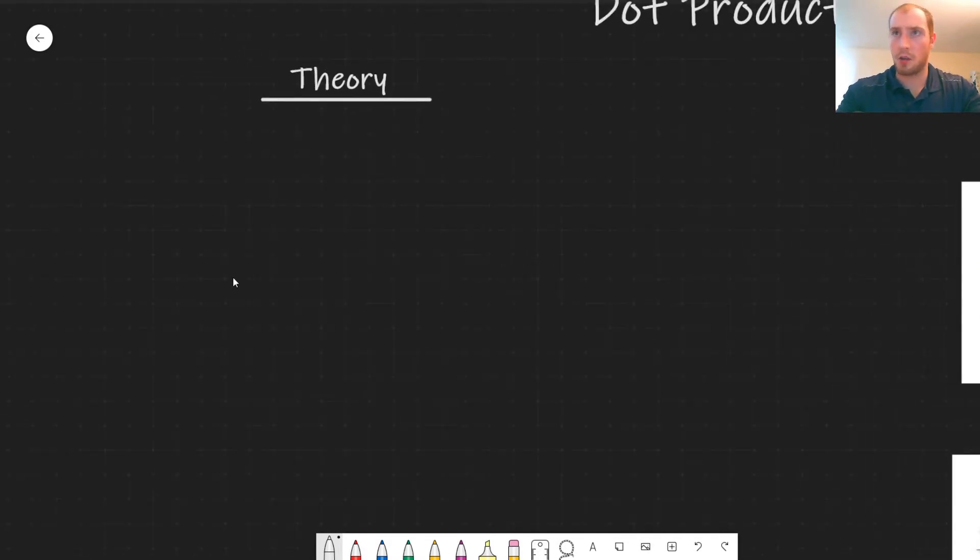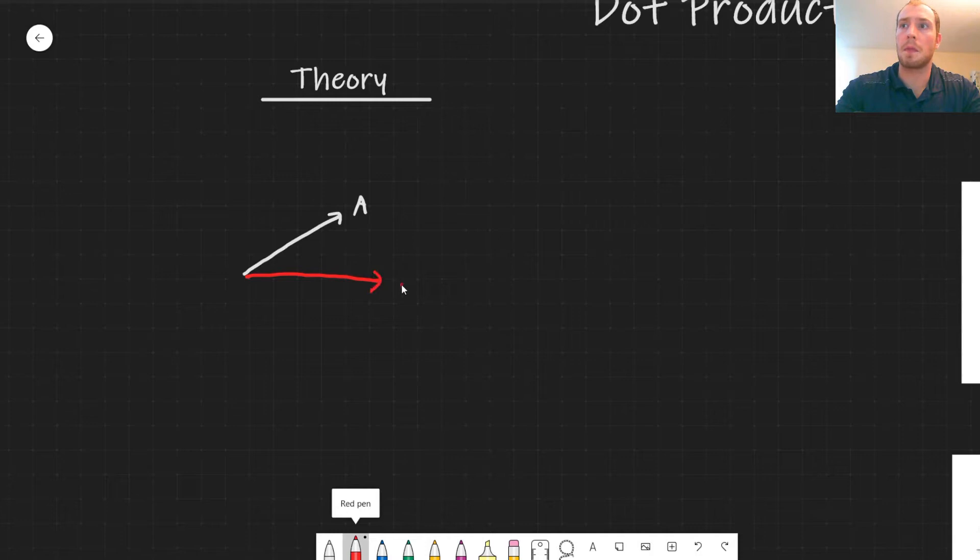So the theory. If we have one vector here, we call this vector A, and we're going to draw this in 2D for now, and we have a second vector labeled B. The dot product is the projection of the first vector onto the second vector as shown like this. So the magnitude of this dot product value would be this length right here, where this is A dot B.